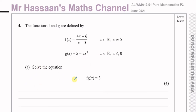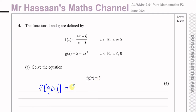First, it says solve the equation f(g(x)) = 3. That means we've got to take the function g and substitute it into the function f, equate that expression to 3, and then solve the equation that's formed. f(g(x)) means taking g(x) and substituting it inside f, then equating to 3.